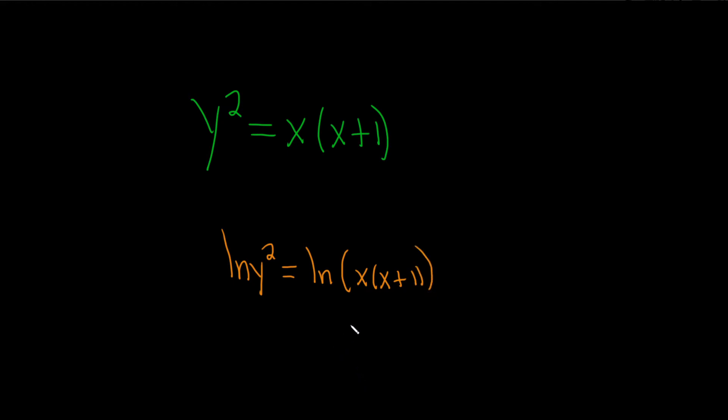And then we use properties of logs to rewrite what we have. So here we have a 2, and it's in the exponent. So we can bring it down and put it in the front using the power rule for logarithms. So this is 2 natural log of y equals. Here we have a product, so we can use the product rule, which says this turns into the natural log of x plus the natural log of x plus 1. Whenever you have a product, it turns into a plus.